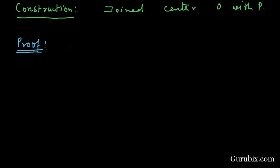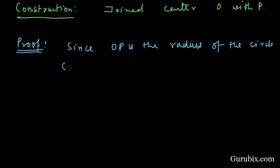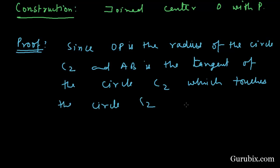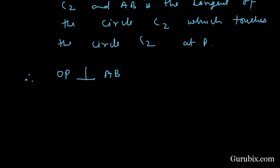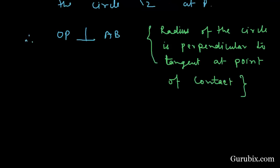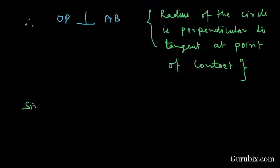Since OP is the radius of circle C2 and AB is the tangent of circle C2 which touches it at P, therefore OP is perpendicular to AB. The reason is: the radius of a circle is perpendicular to the tangent at the point of contact.